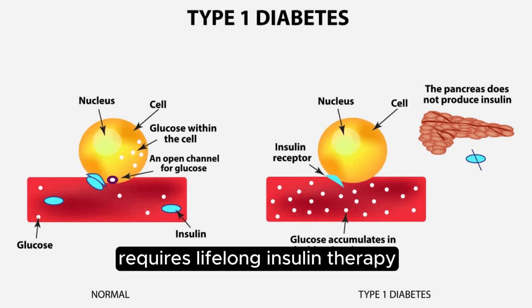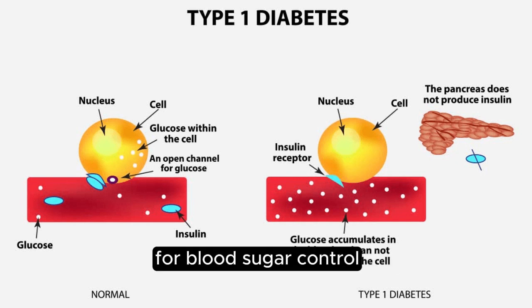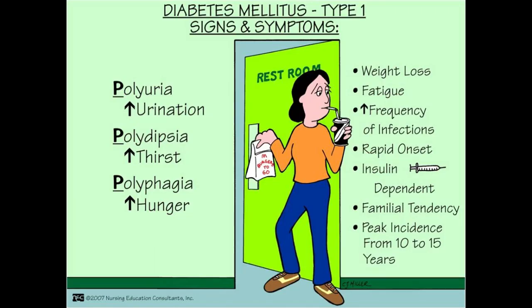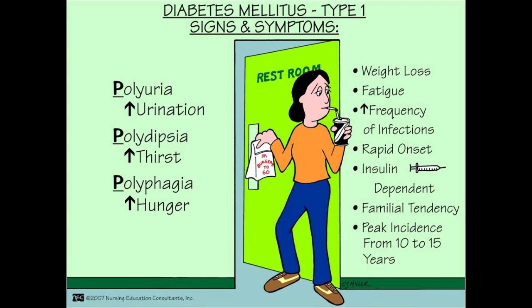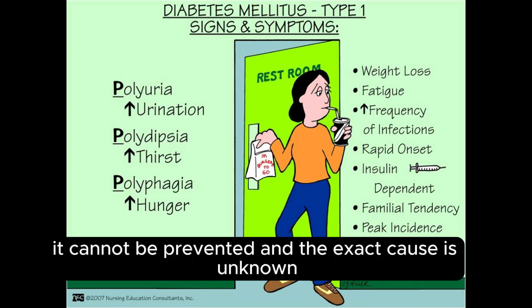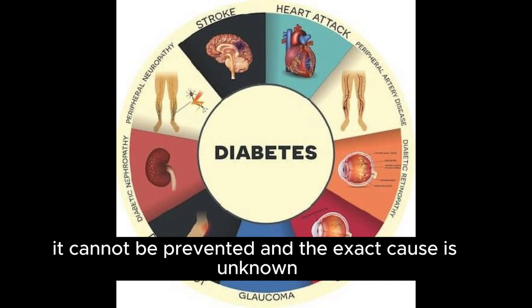Type 1 diabetes requires lifelong insulin therapy for blood sugar control. It is not typically associated with obesity, and it cannot be prevented — the exact cause is unknown.